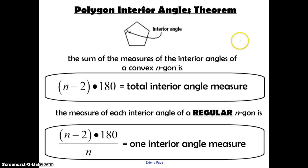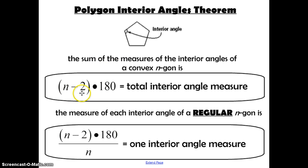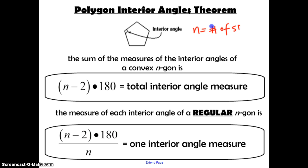Now we're going to talk about the polygon interior angles theorem. An interior angle is the angle created inside of the polygon by the sides of the polygon. The sum of the measures of the interior angles of a convex n-gon is (n−2) × 180, which equals the total interior angle measure. n stands for the number of sides and also the number of angles of a polygon.